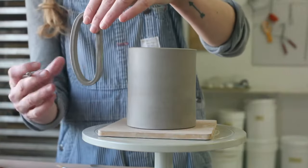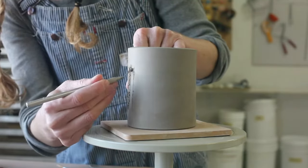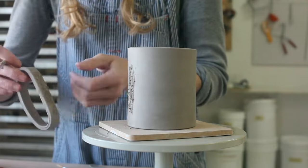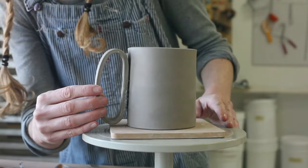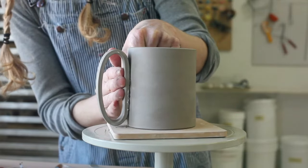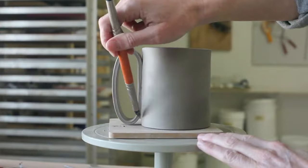Use a needle tool to mark the connection points on the mug. Give both pieces a good scoring, add your water, and put some pressure on the pieces to seal them together. Use the paint brush or rubber tip tool to clean up around the handle.